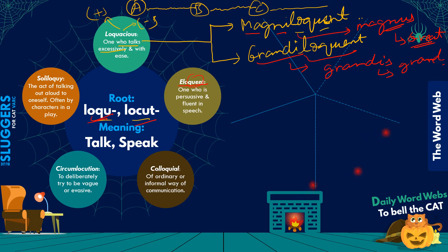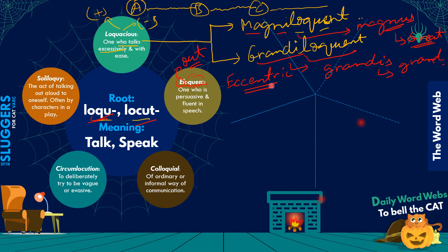Eloquent — the later part comes from today's root LOC/LOQU, and the first part 'e' simply stands for 'out,' like in the word eccentric. Eccentric means out of the center — someone who is out of the ordinary, unusual. Similarly, in eloquent, 'e' stands for 'out,' so etymologically eloquent means someone who speaks out.